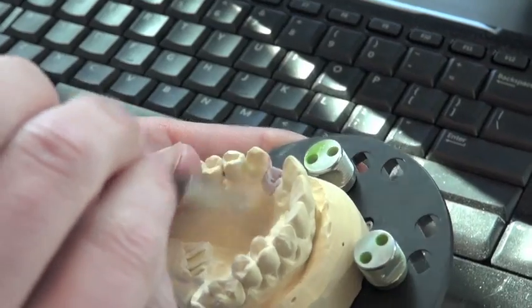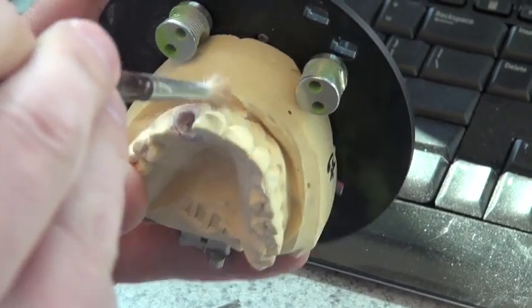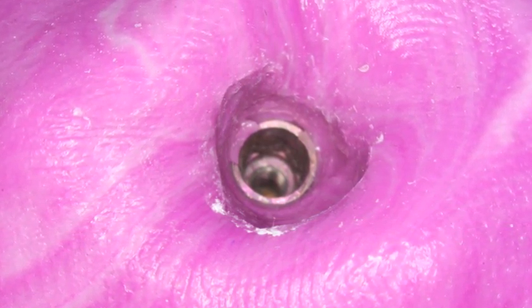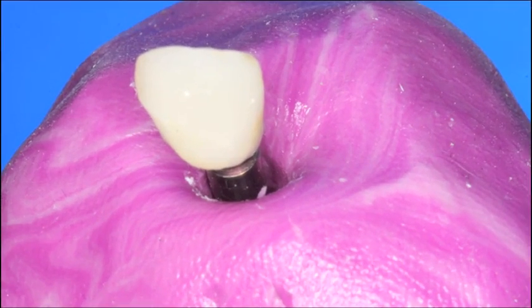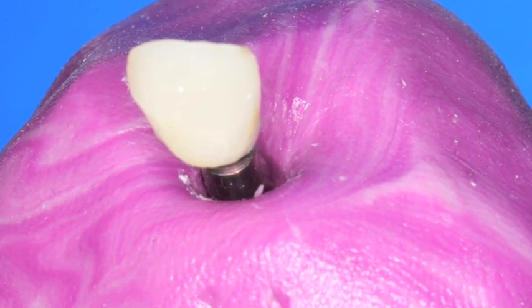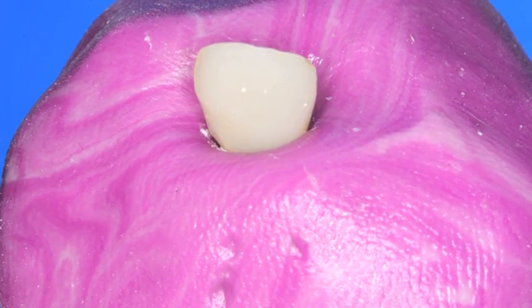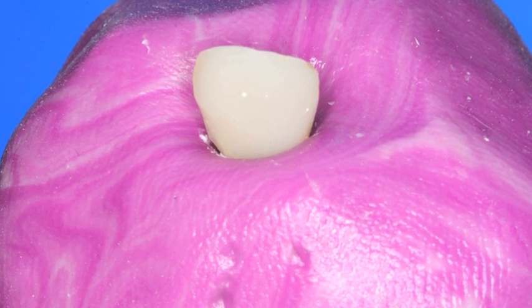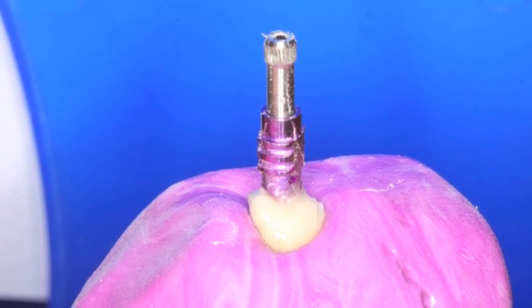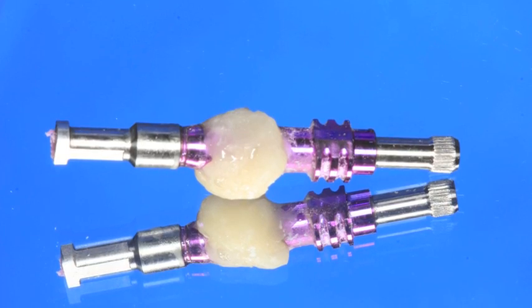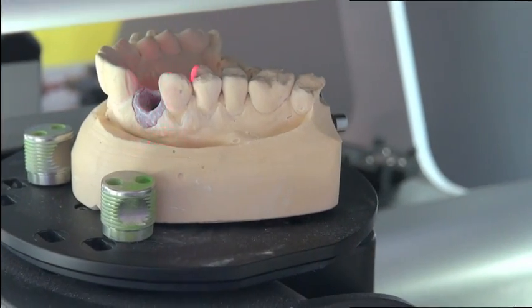Now how we did this was using a customized impression coping. By using some putty, we picked up the shape of the temporary. So we could take the temporary, put it on a replica, push it into the putty, and then this gets the shape of the replica and the tooth, and then brings it so that we can put the impression coping, place it into this, and then fill it with resin, go back to the mouth, and do an impression with a customized impression coping.